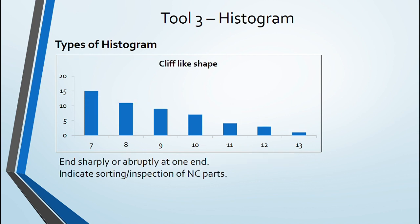Next is cliff-shaped histogram. It ends sharply and abruptly at one end. It indicates that inspection or sorting is required for non-confirming parts identification associated to high rejection process.